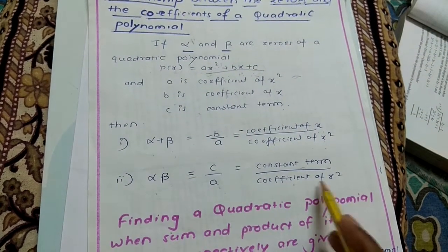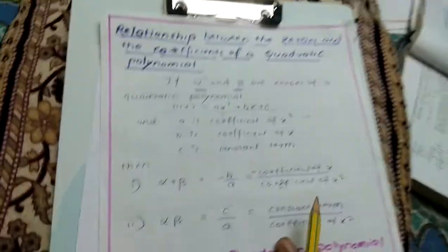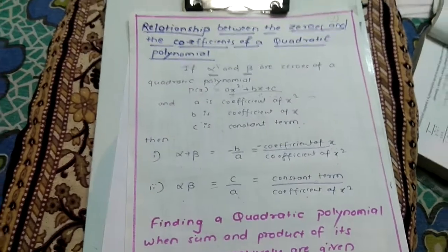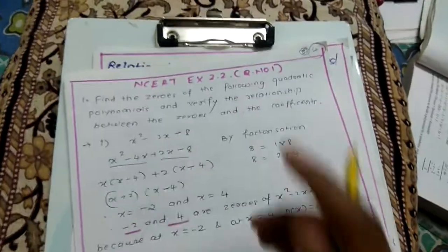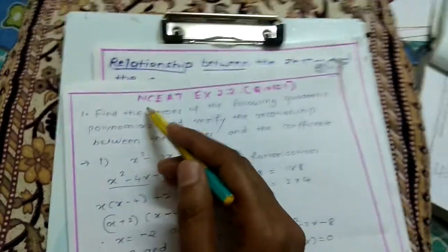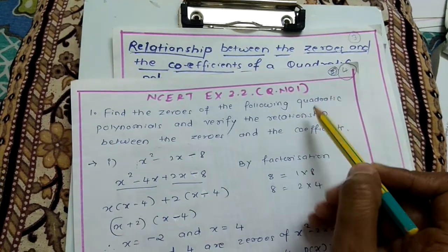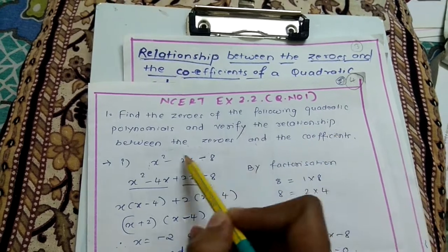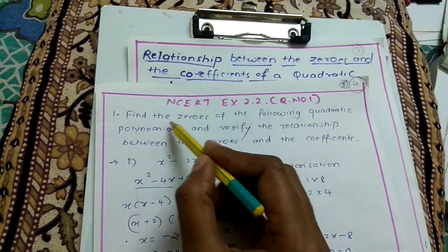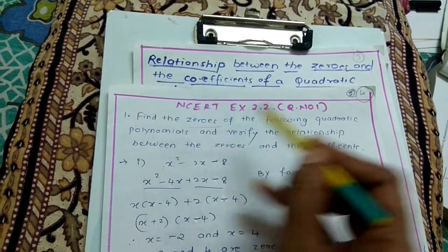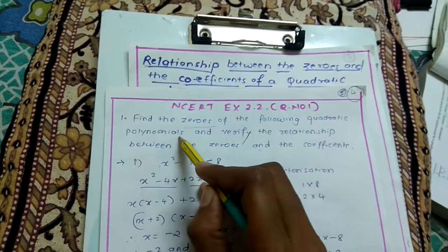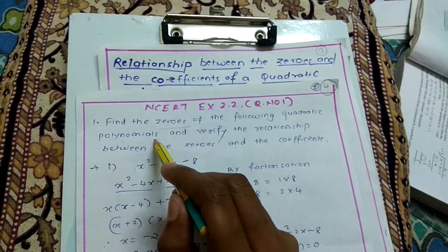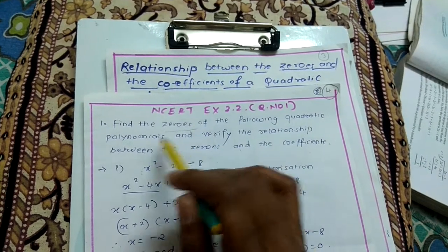And a is the coefficient of x squared. Depending on this, we will take some examples from exercise 2.2. You will get questions like: find the zeros of the following quadratic polynomials and verify the relationship between the zeros and the coefficients. First you have to find the zeros of the quadratic polynomial — you have already done this from eighth and ninth standard.